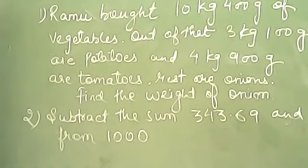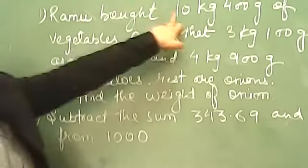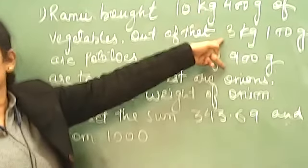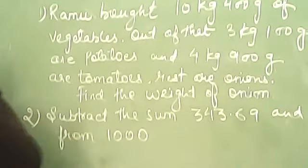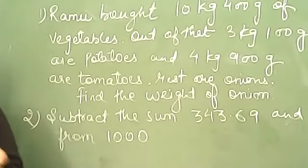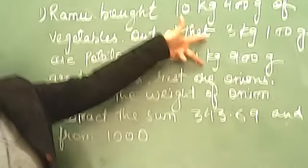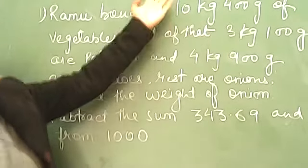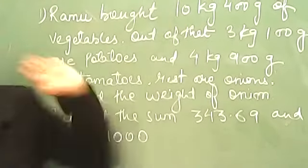If you talk about this full question, total is this and segregation is this. So don't add it all. Here you are saying the amount of onion you have to take out. So first you need to add these two and subtract from 10 kg 400 grams. Very simple process.